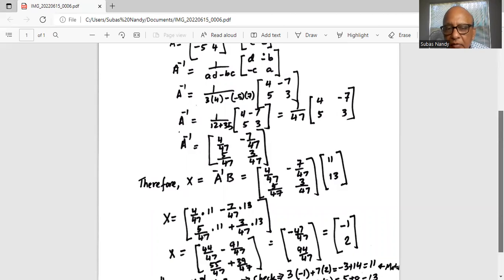Second row, first column will be 5 over 47 distributed to 11 plus 3 over 47 distributed to 13. Distributed means multiplication.